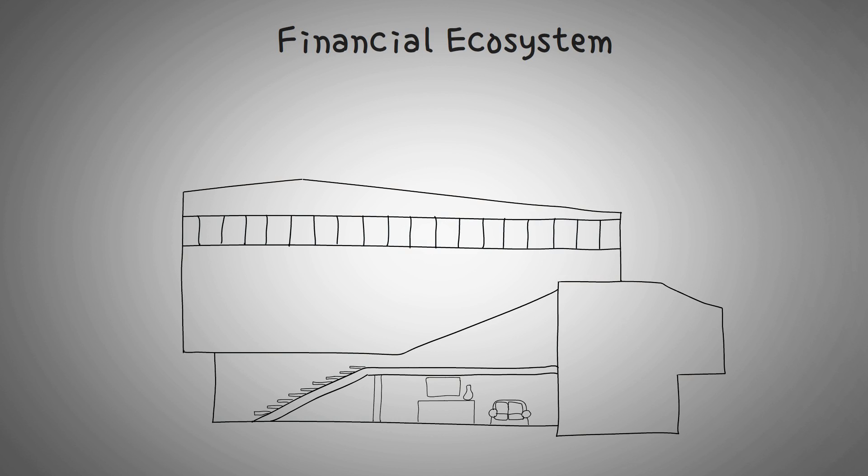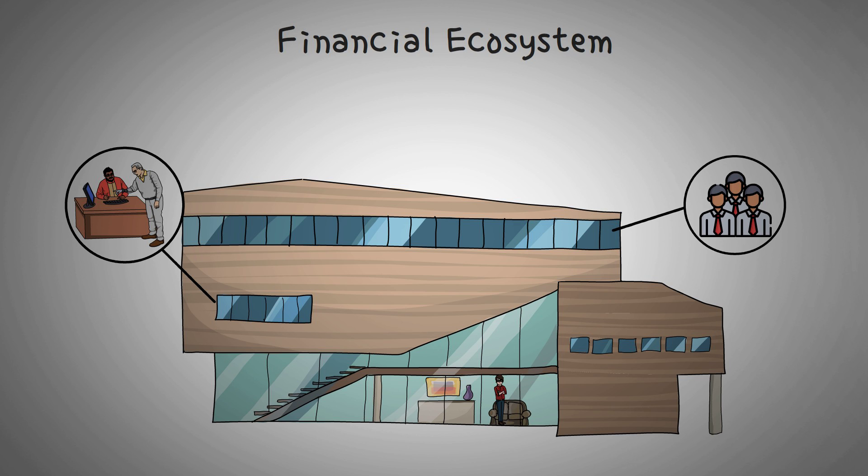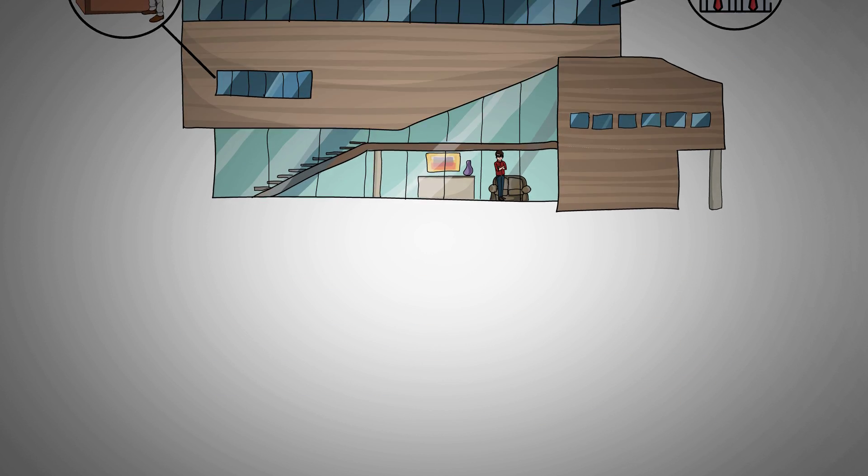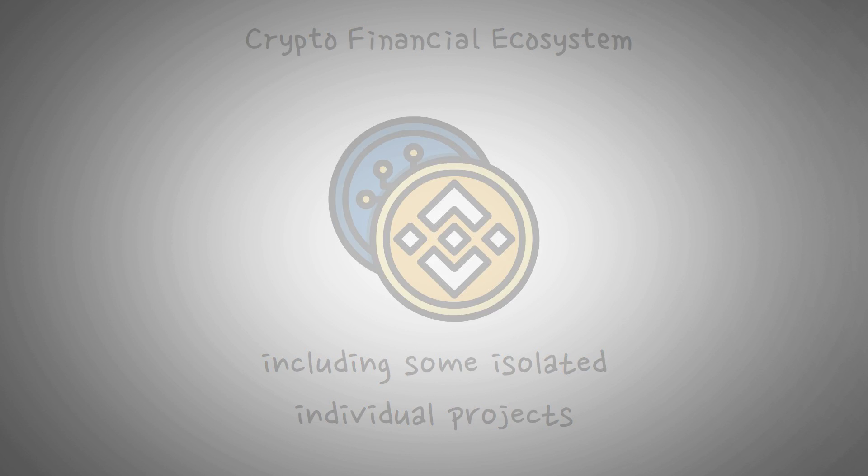So if you heard the word financial ecosystem, what would you think? The idea is the same, it's a collection of different people, organizations, processes, and systems that let us all buy and sell things, use money, save it, invest it, and everything else related to finance. Let's take it a step further. What about the phrase crypto financial ecosystem? Now this is a whole new arena. The crypto world may have some isolated individual projects, but what it really needs is an ecosystem.